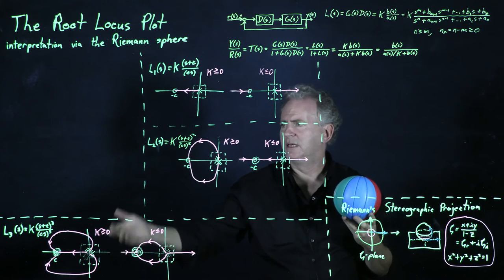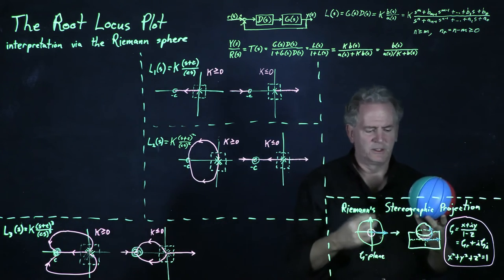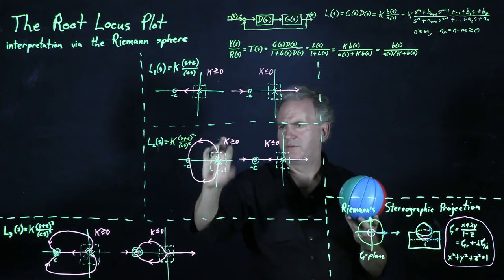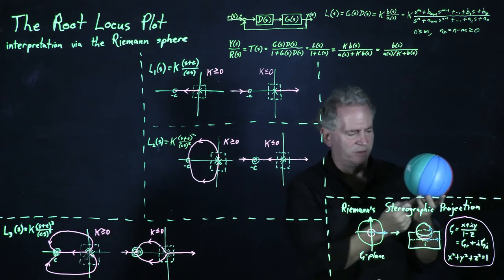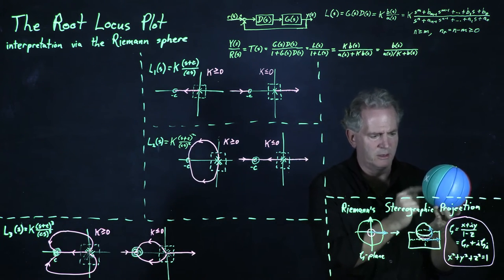And this sort of argument can be extended to the l2 of s case and the l3 of s case. So in this case, for k positive, the two branches of the locus kind of look like rubber bands going from here to here.